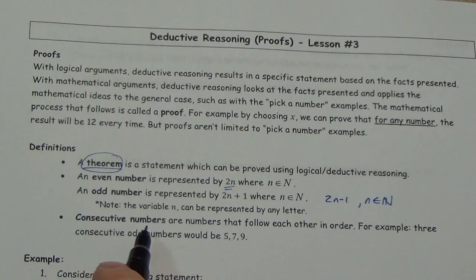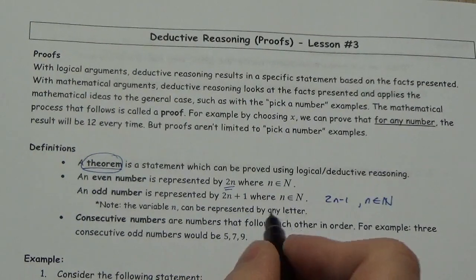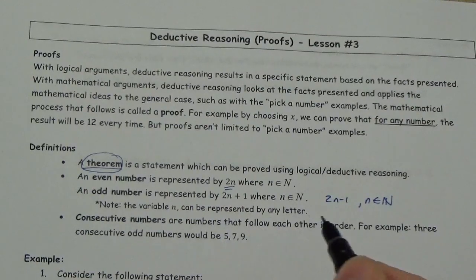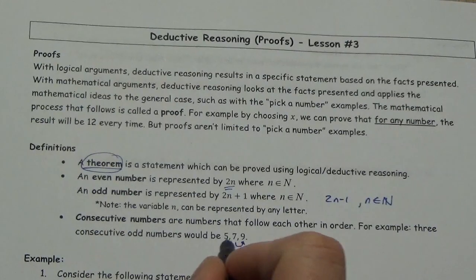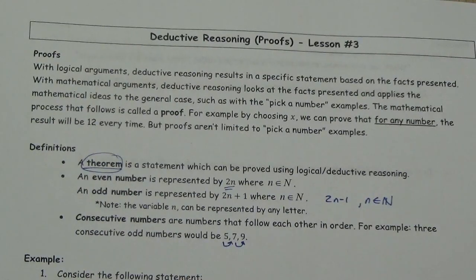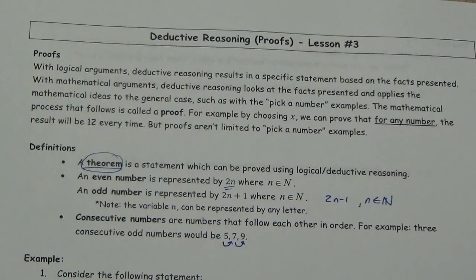Consecutive numbers are numbers that follow in order. For example, consecutive odd numbers would be 5, 7, and 9. When talking about consecutive odds or consecutive evens, the difference between numbers next to each other is going to be 2. But if they're just natural numbers with no stipulation of odd or even, they differ by 1. Let's take a look at how a proof would work in this lesson.